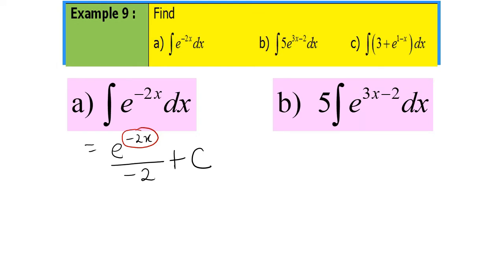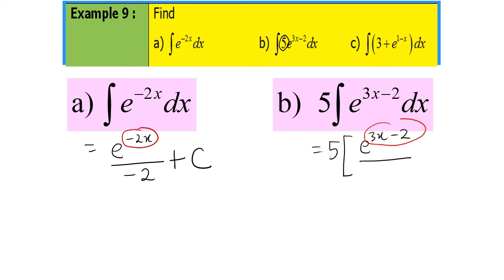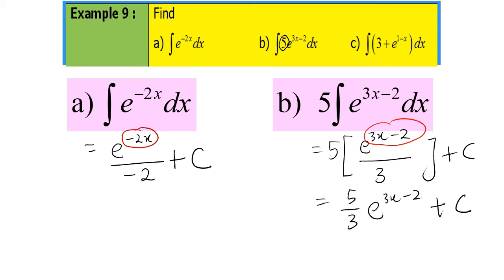For part B, first we have to factorize 5 outside the integral. Then we integrate: copy the question e^(3x-2), divided by the differentiated power — differentiating 3x minus 2 gives 3. Then plus c. So the final answer should be 5 over 3 times e^(3x-2) plus c.